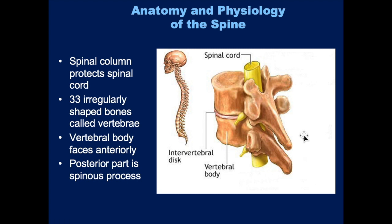Each vertebra is connected with a series of ligaments that run in between these bones and connect the different vertebrae. In between each vertebra is a fluid-filled intervertebral disc — a cartilage disc filled with fluid in the middle that acts as a shock absorber between the vertebrae, and that can be ruptured as well with injury to the spinal column.